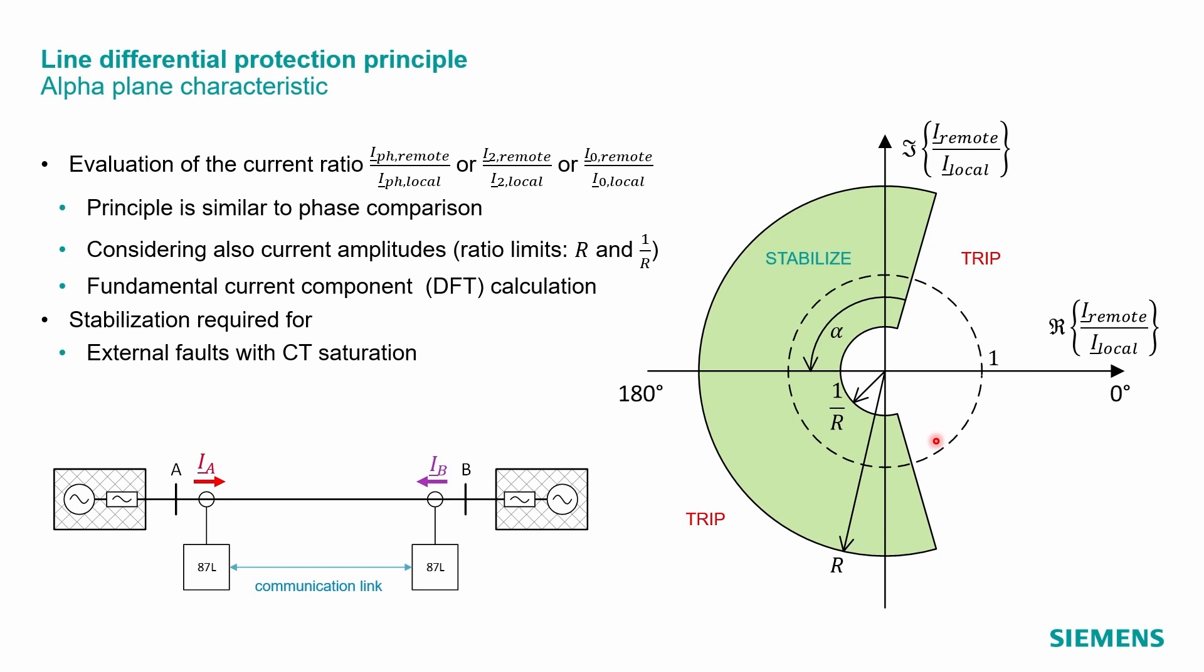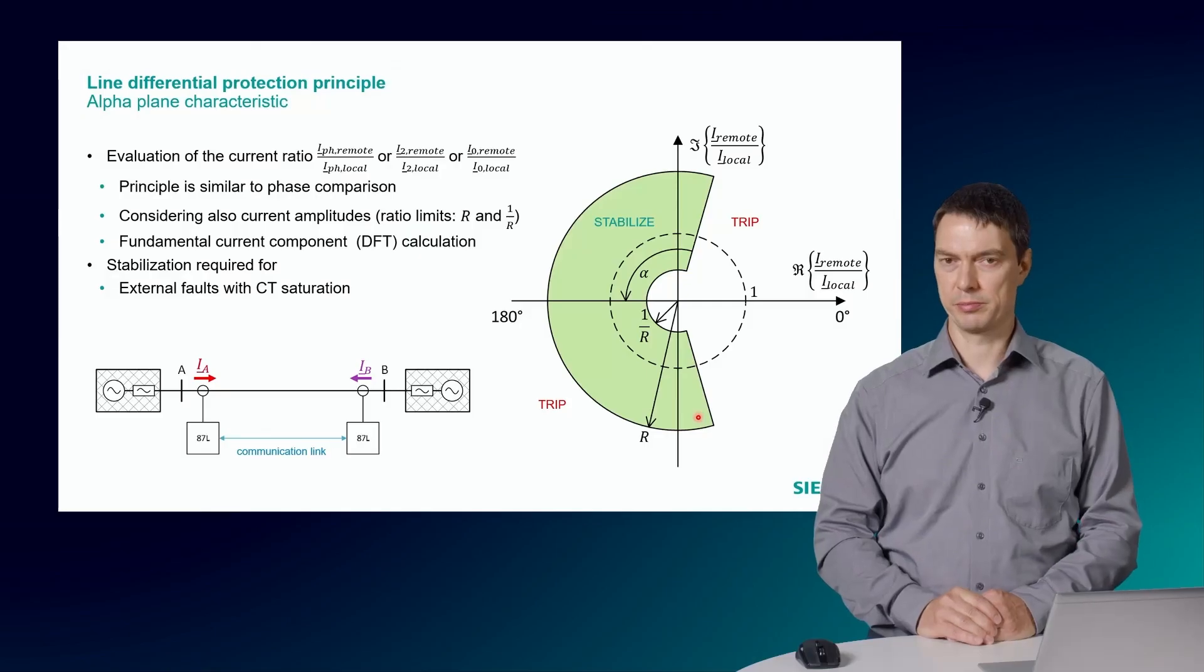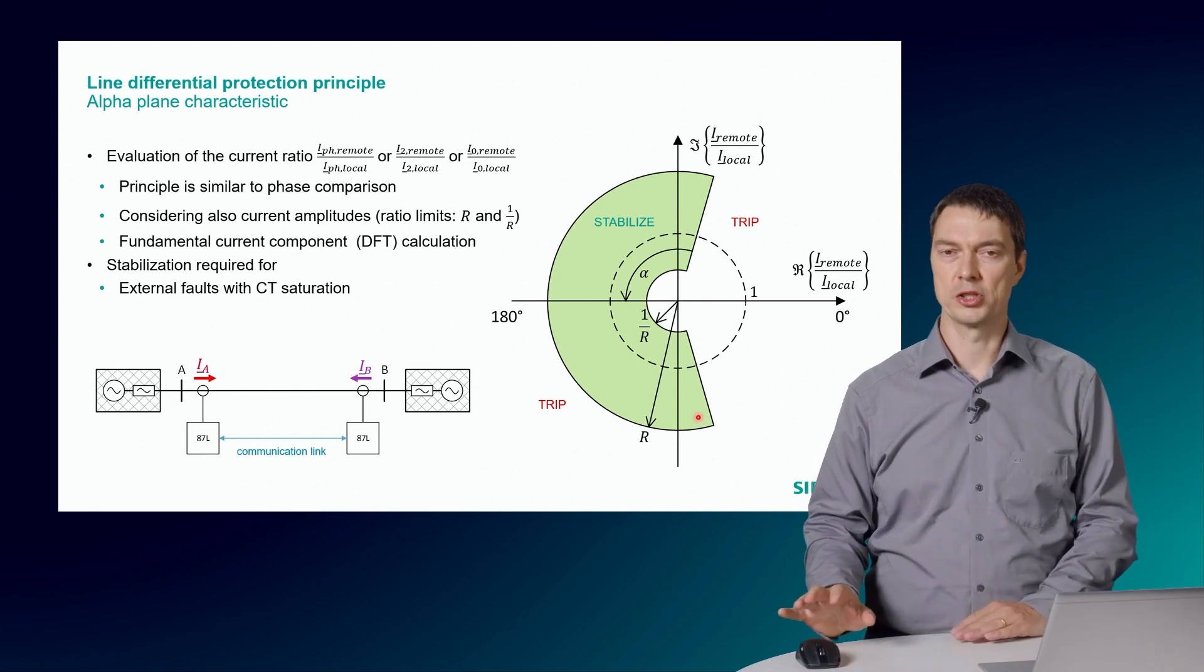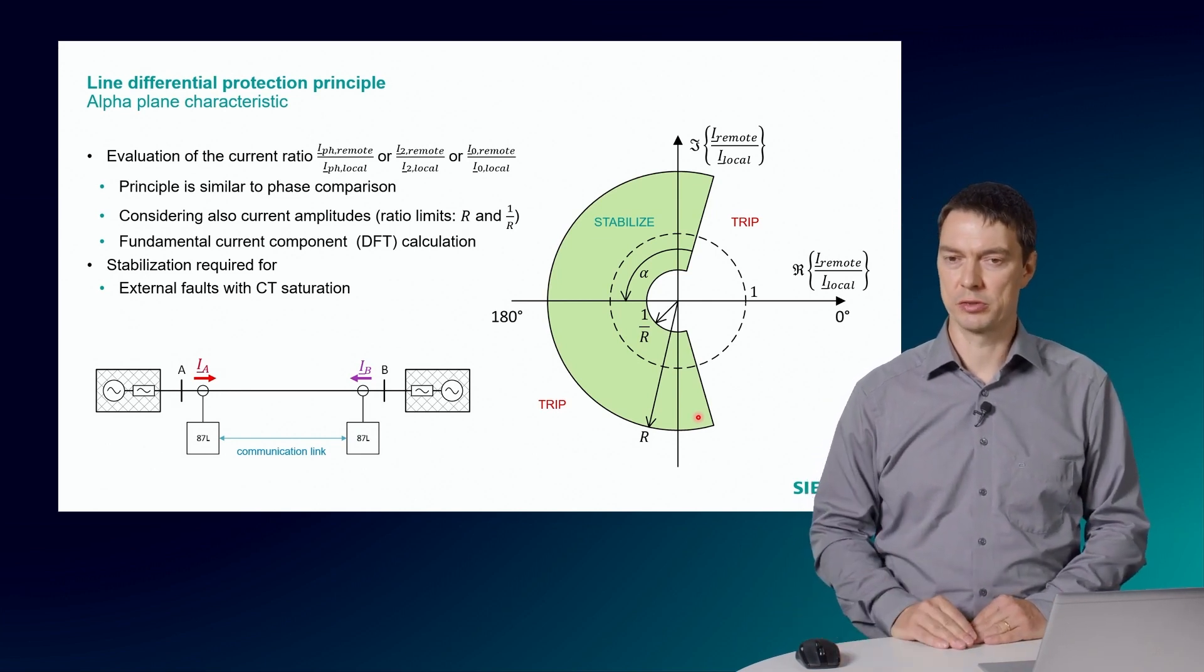Some current amplitude difference shall be acceptable. Therefore, we set a maximum ratio R in this device. This defines an inner and an outer radius of this stabilization area. The maximum phase angle is defined by the phase error to be considered, similar to the previous explained phase comparison principle. Also, the alpha-plane needs some additional stabilization for CT saturation, which is not shown here.